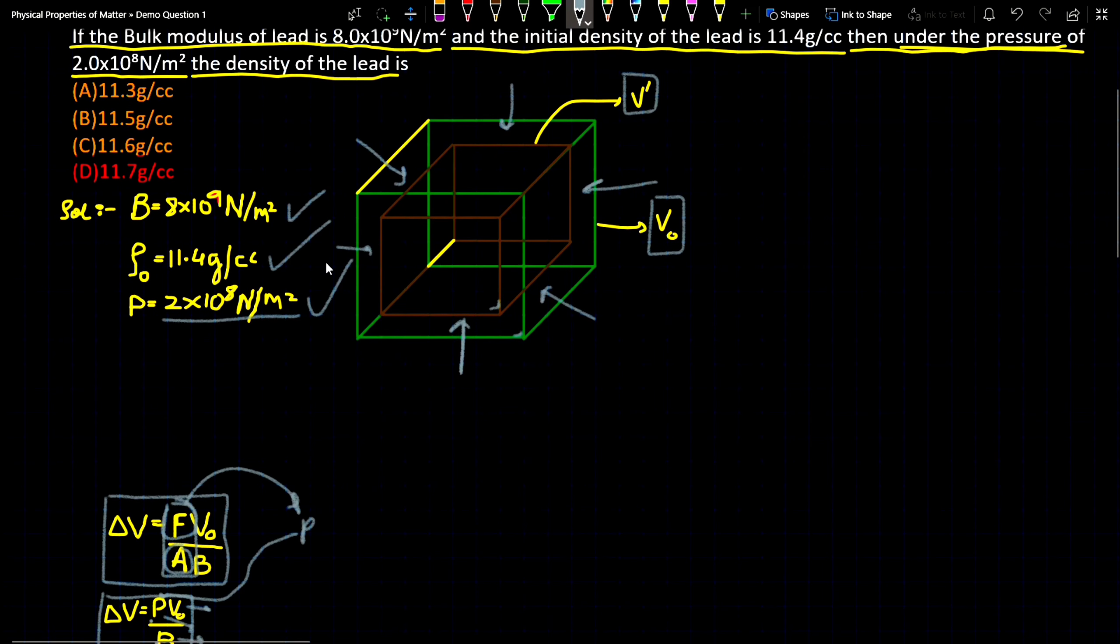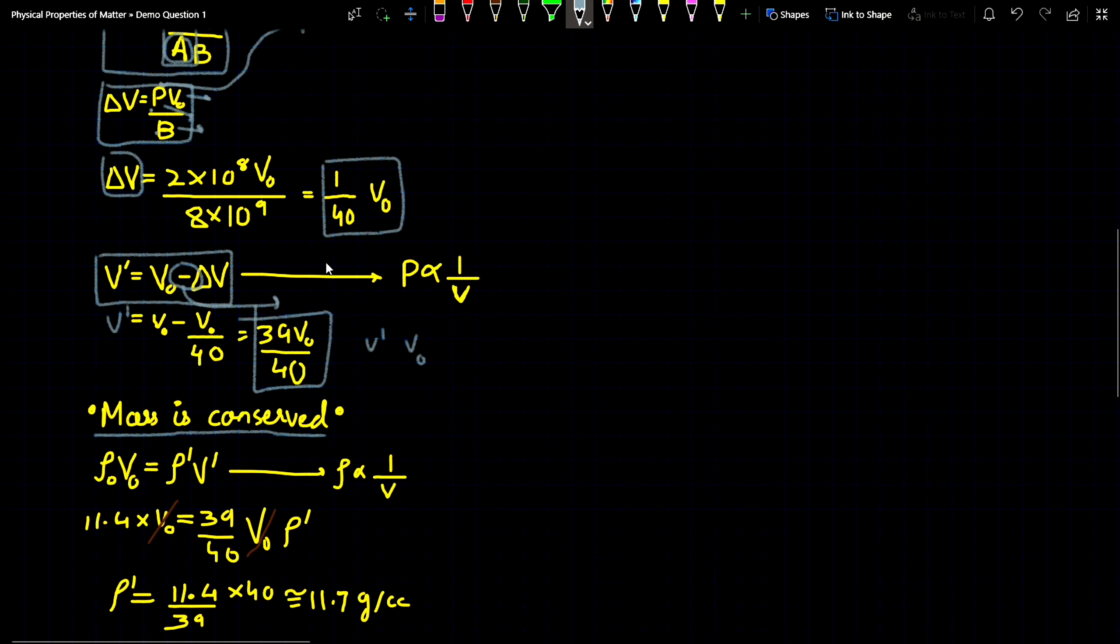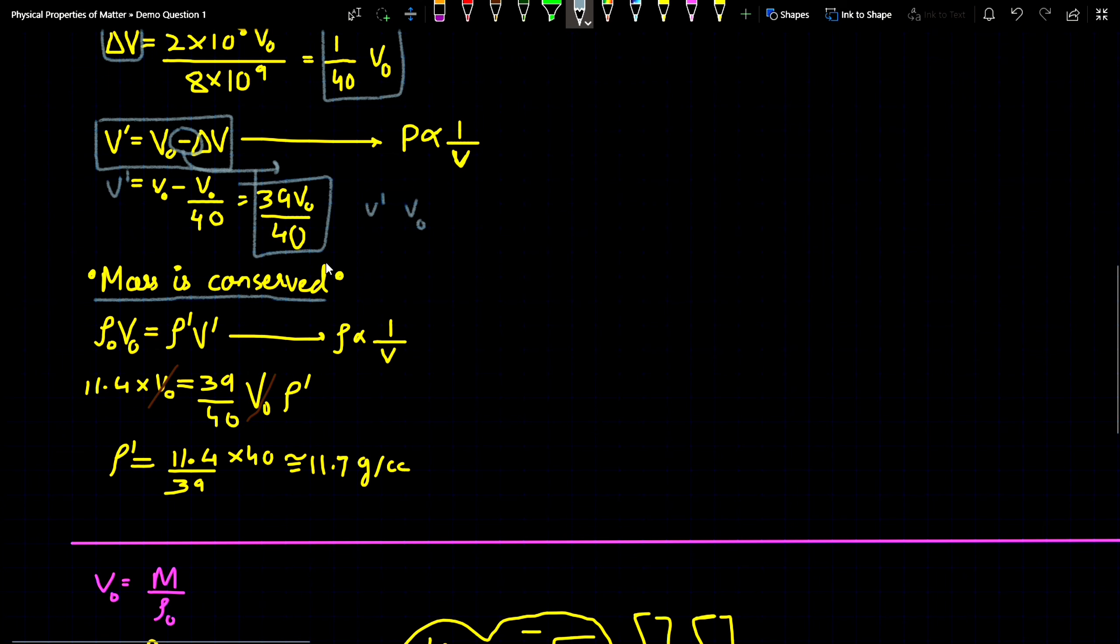To compare the densities we will use the concept of conservation of mass. Why is mass conserved? Because by applying the pressure the mass doesn't change. The thing which changes is the volume and its density. By applying the pressure the mass won't change.